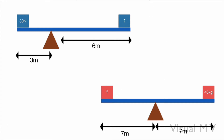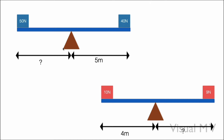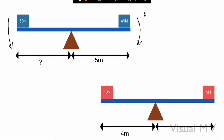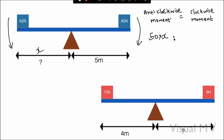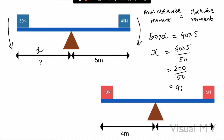In the next question, all cases are balanced. On the left side is the anti-clockwise moment; on the right side is the clockwise moment. The equation is anti-clockwise moment equals clockwise moment. The force is 50 Newton and the distance is unknown, so I write 50 × X = 40 × 5. Solving: X = (40 × 5) / 50 = 200 / 50 = 4. So the distance is 4 meters.